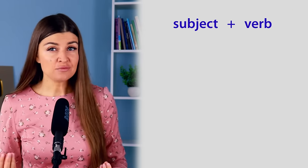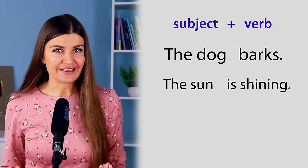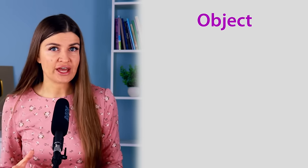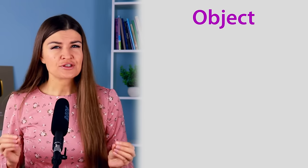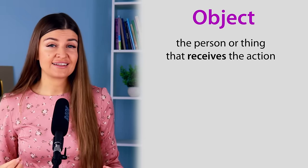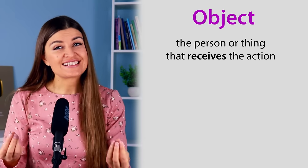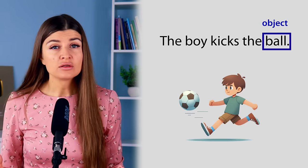Now we can make a simple sentence by combining a subject and a verb. For example, the dog barks. The sun is shining. In English there are not only short sentences, but also long and more complex ones. In most cases a sentence has an object. Not all sentences need an object, but if there is one, it usually comes after the verb. The object is the person or thing that receives the action. For example, the boy kicks the ball — the ball is the object.